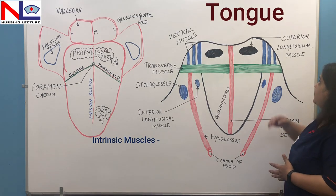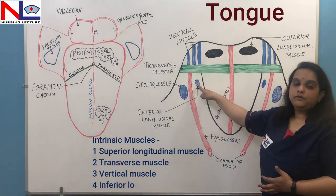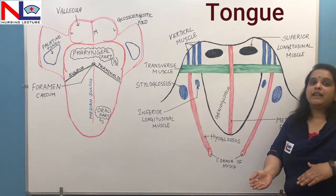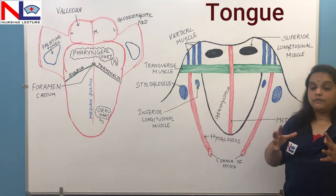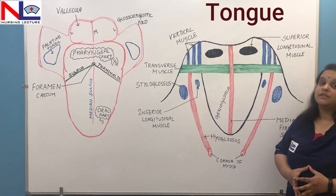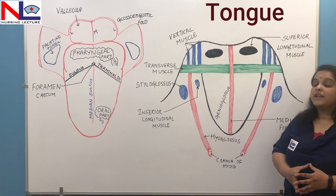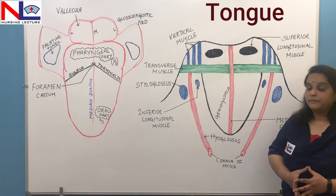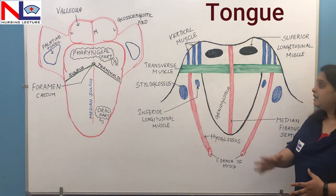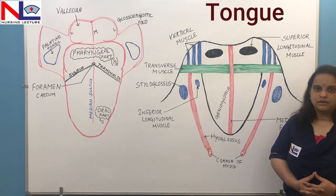The intrinsic muscles are: superior longitudinal muscle, transverse muscles, vertical muscles, and inferior longitudinal muscles. These are the four sets of intrinsic and extrinsic skeletal muscle fibers that form the structure of the tongue. In this lecture, we have discussed the structure of the tongue, which is the accessory organ in the digestive system as well as part of the sensory system. We discussed its various parts and the skeletal muscles mainly responsible for its main functions. Thank you.